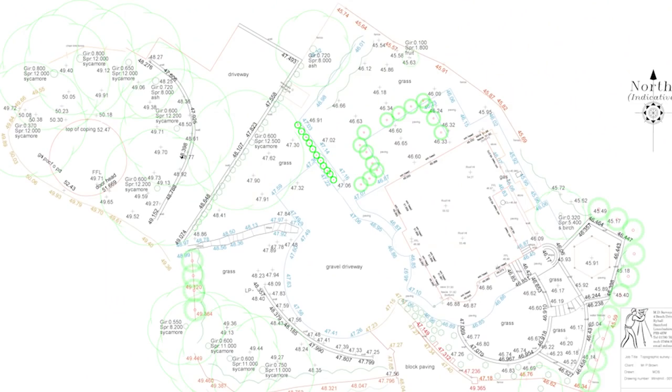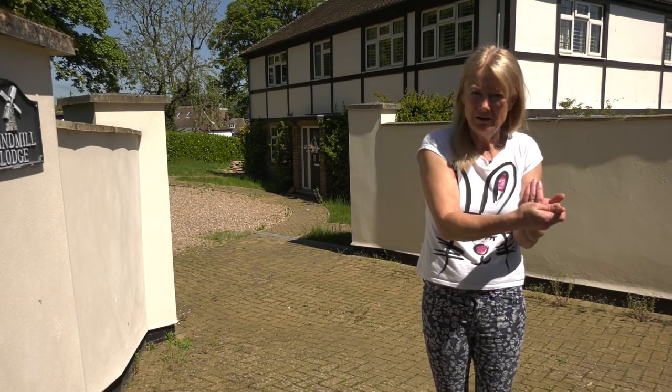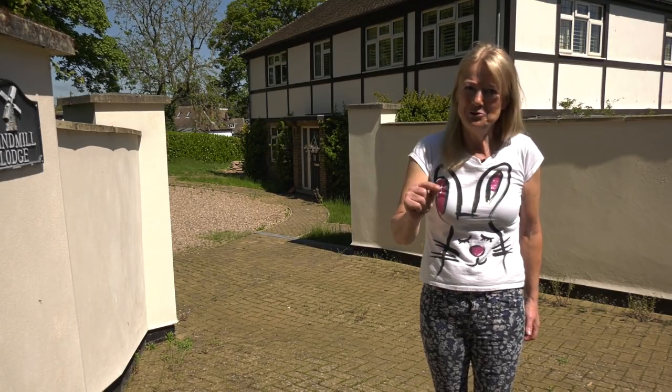A fundamental point: get your survey, put tracing paper over the top, and divide it up into different spaces with pencil — trial and error, try all different ways. Make sure you hide the eyesores or screen them, really big up the good features, make sure you have the parking in the place that makes the garden really work, and make sure you get everything into the design that you want.